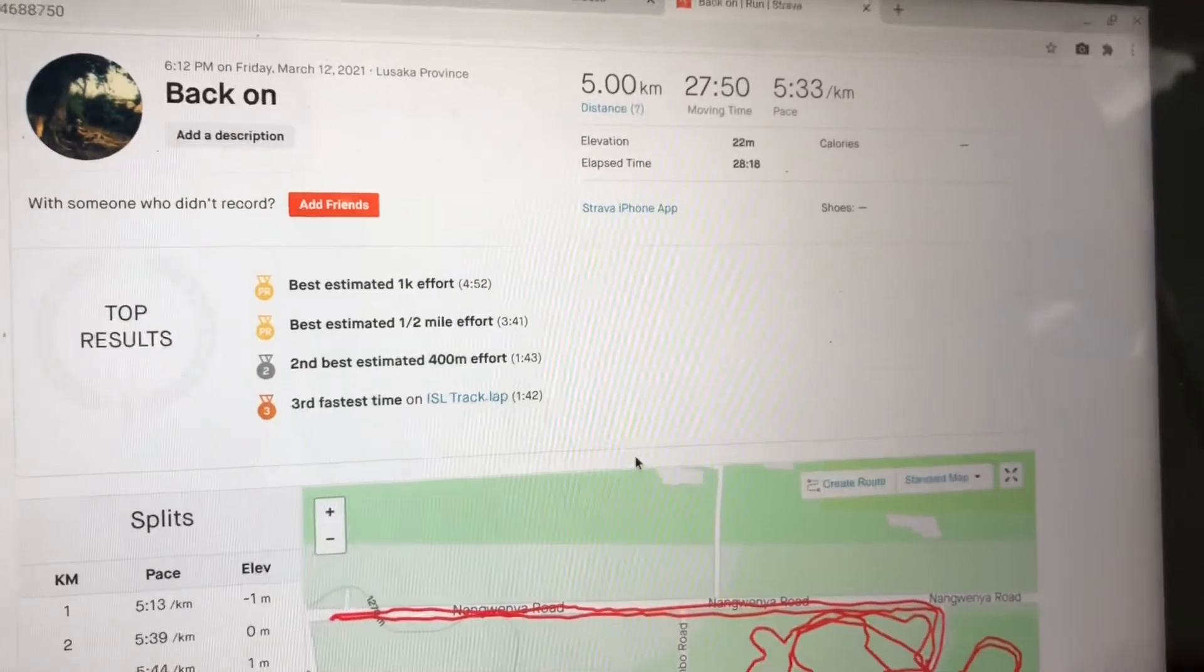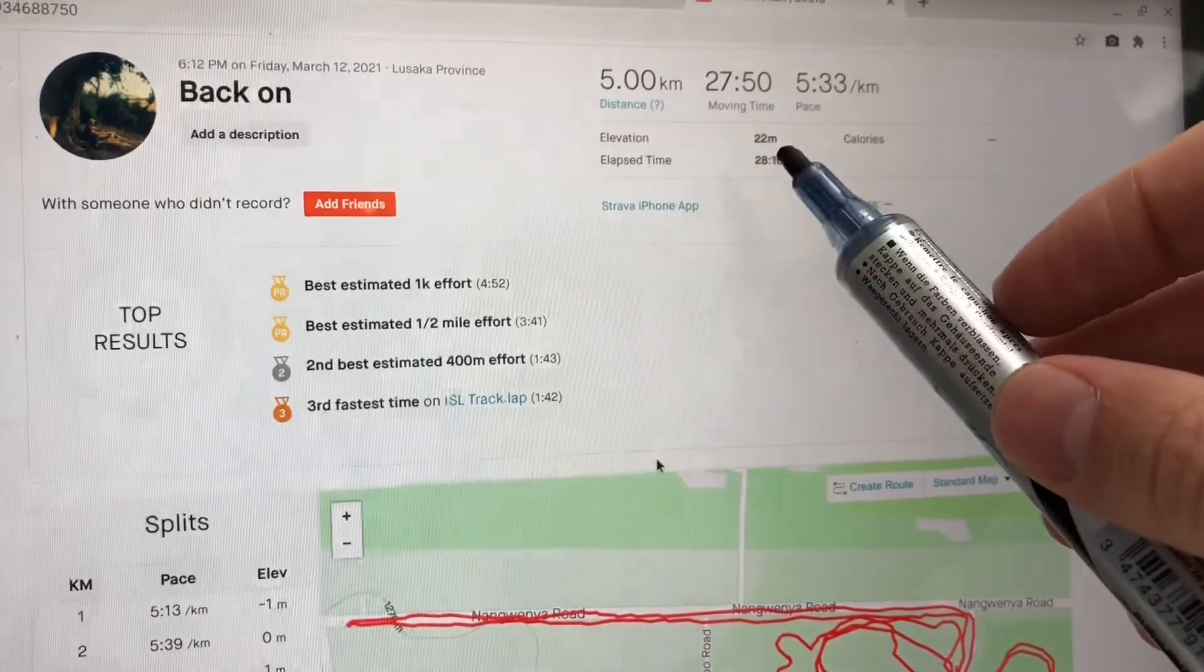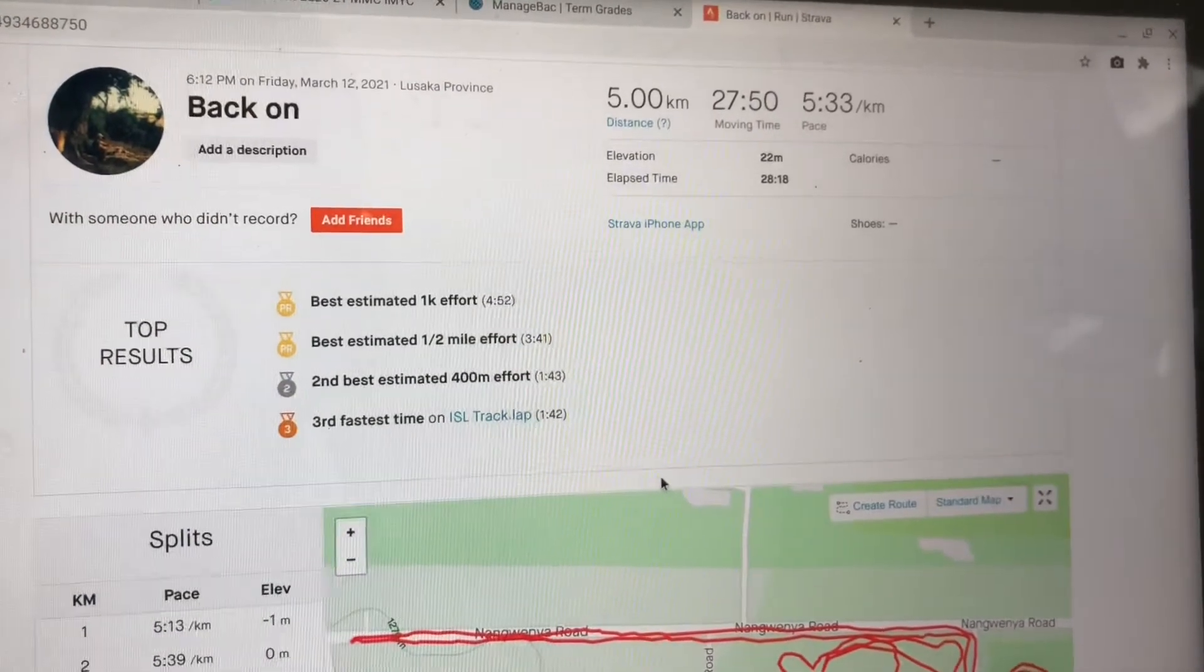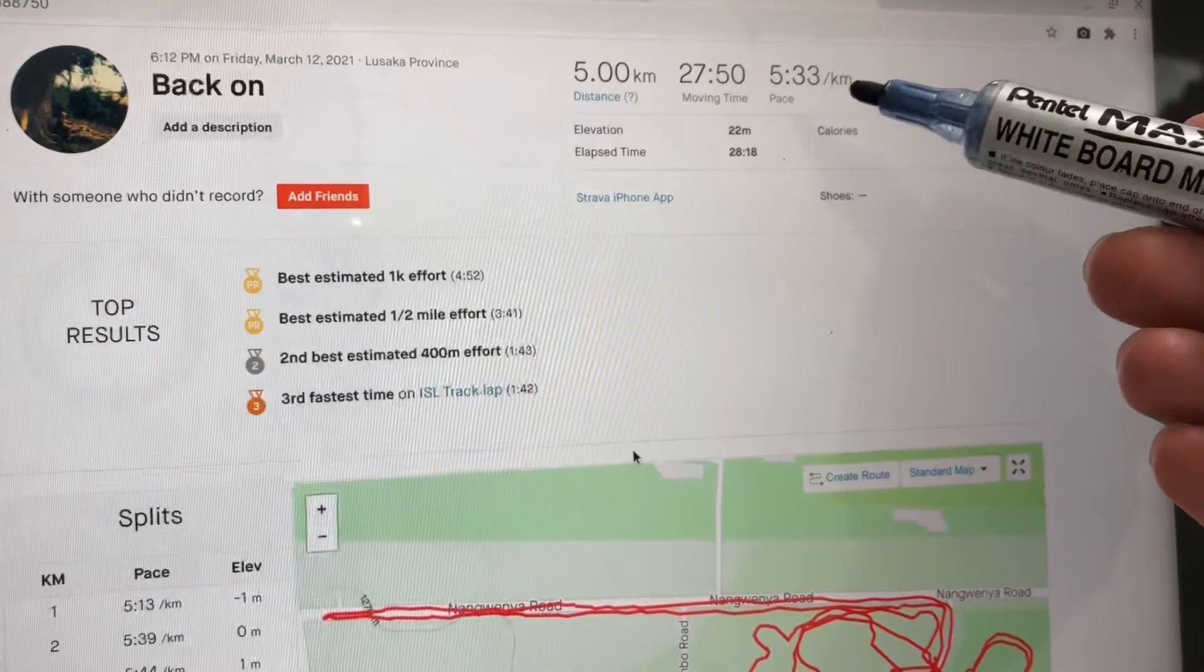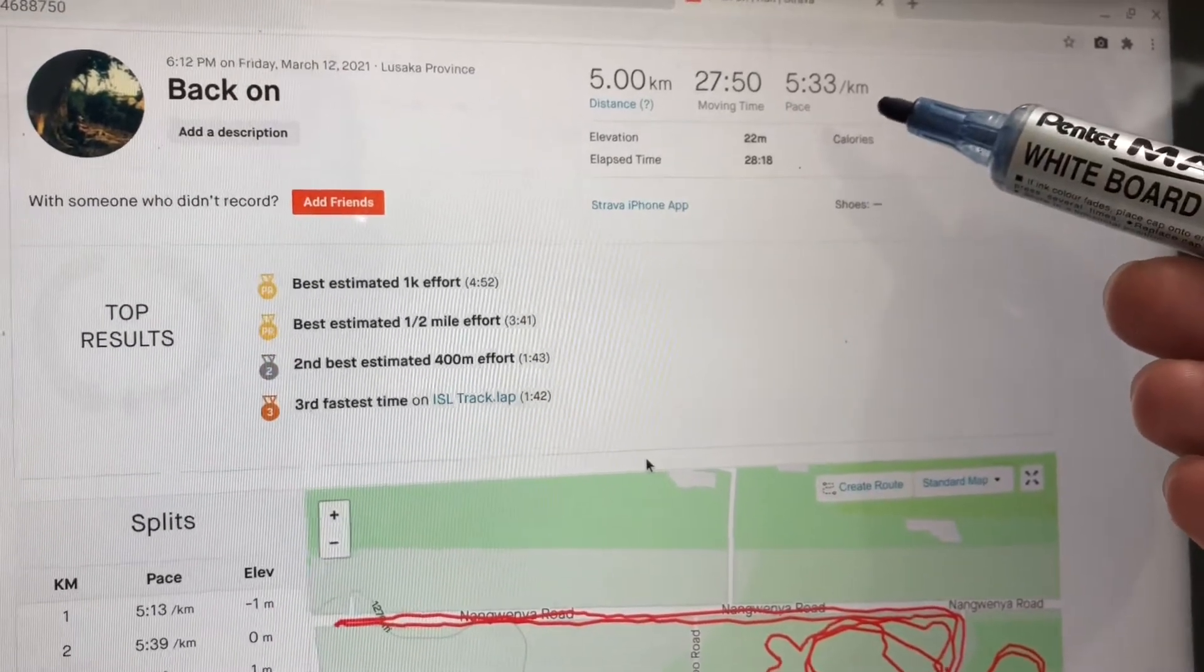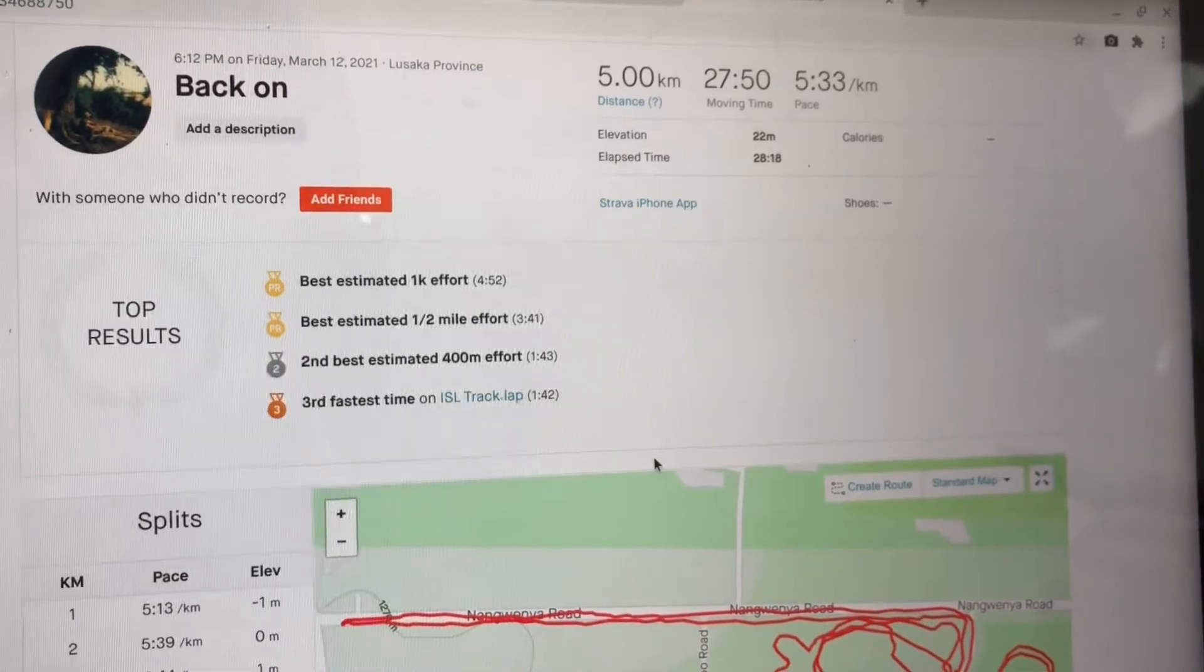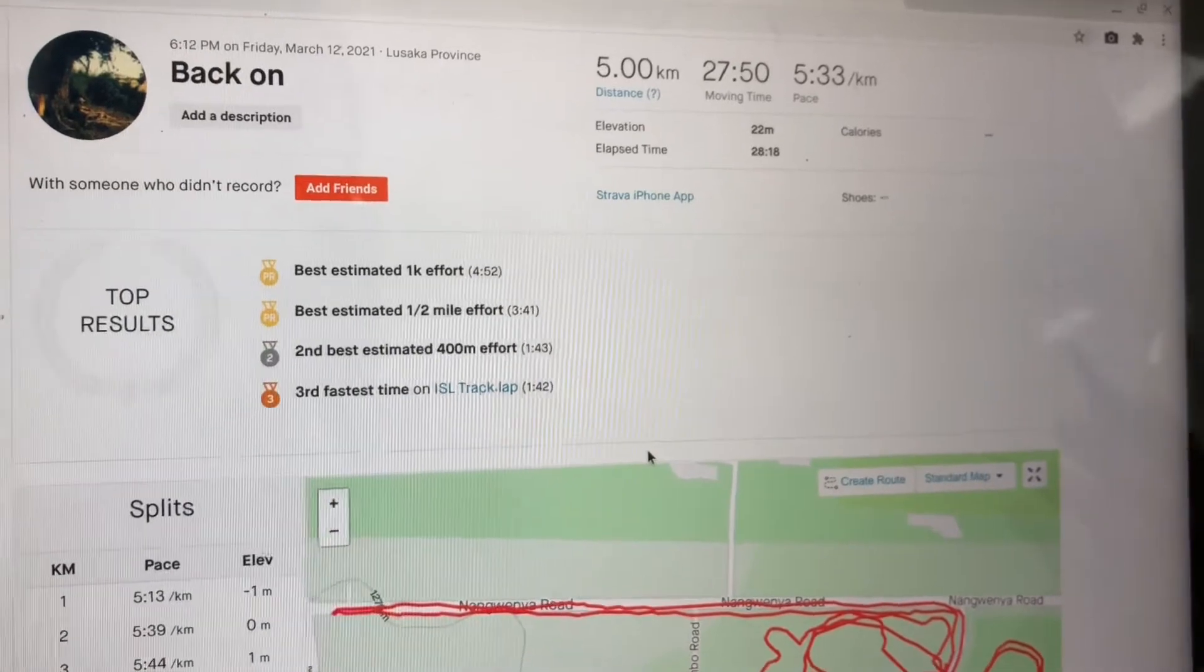So I went for a 5km run and it took me 27 minutes 50 seconds, and I had a pace of 5 minutes 33 seconds per kilometer. So let's see how we work that out.